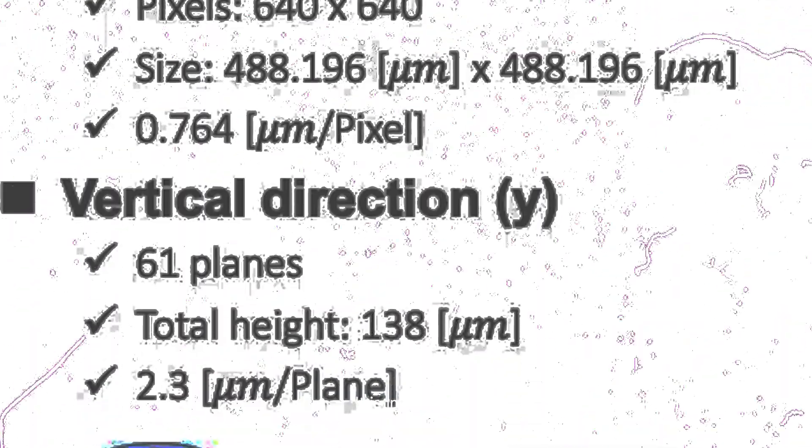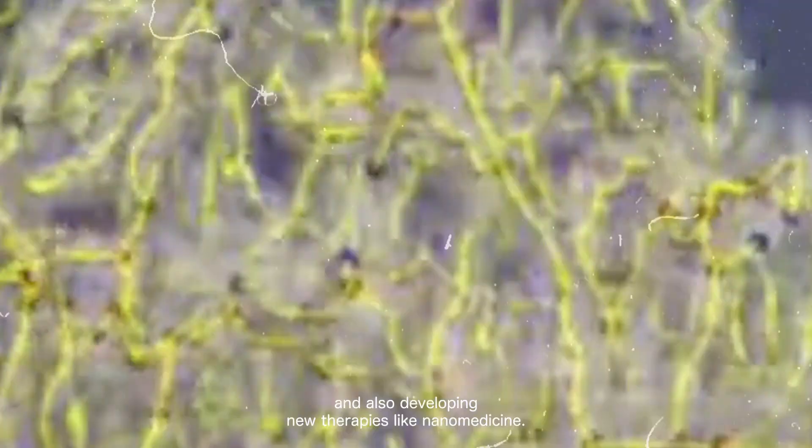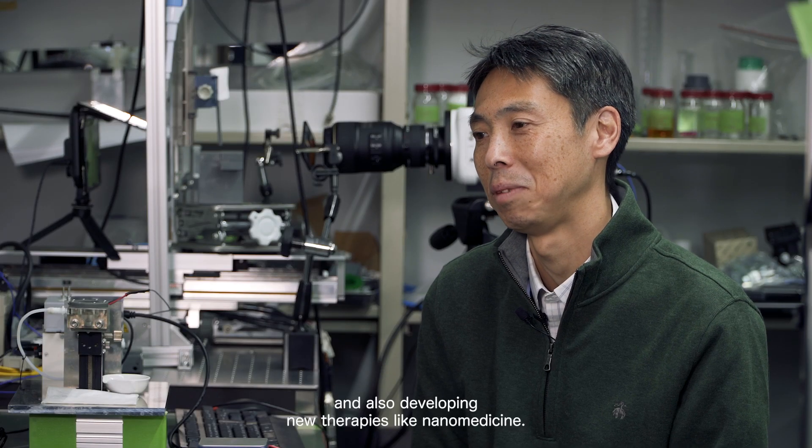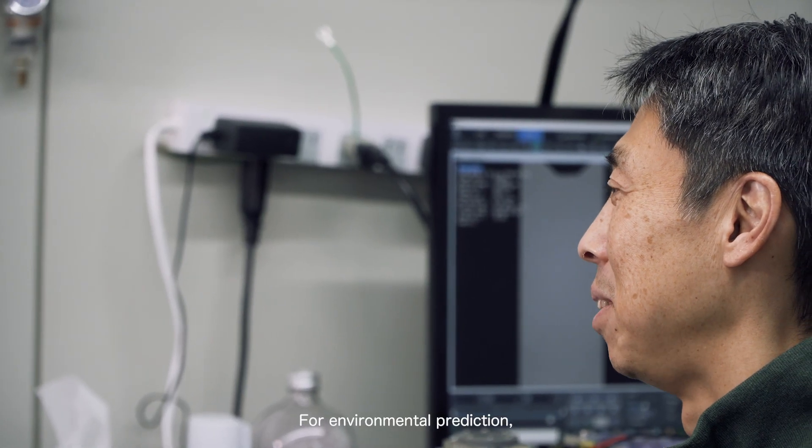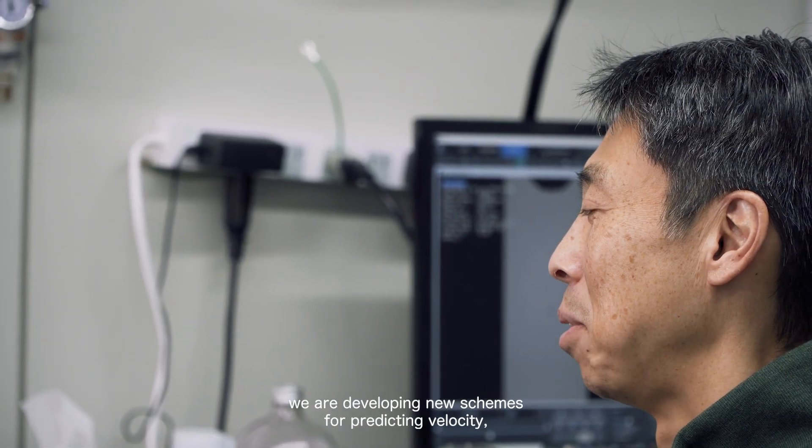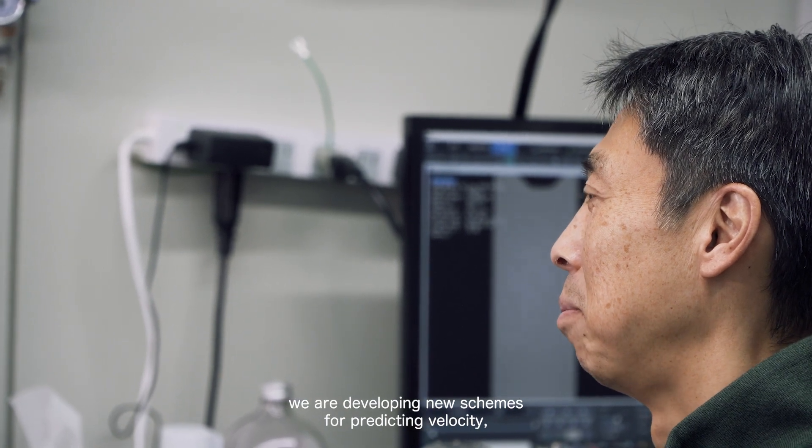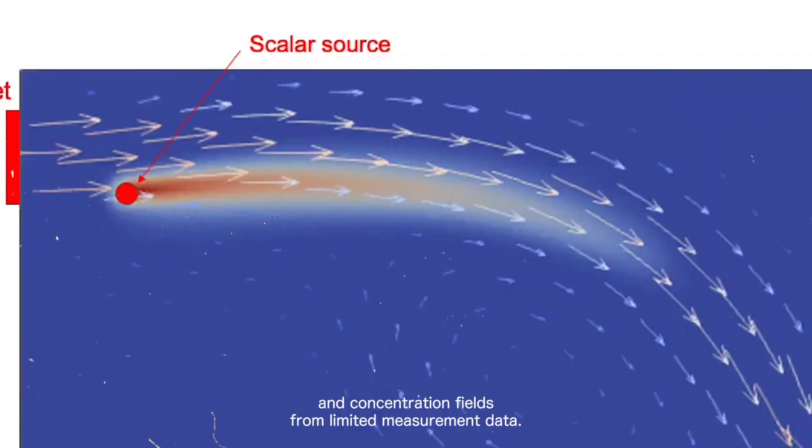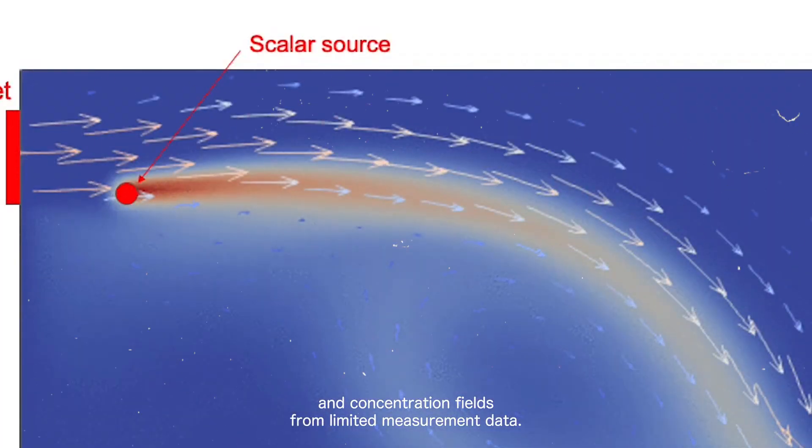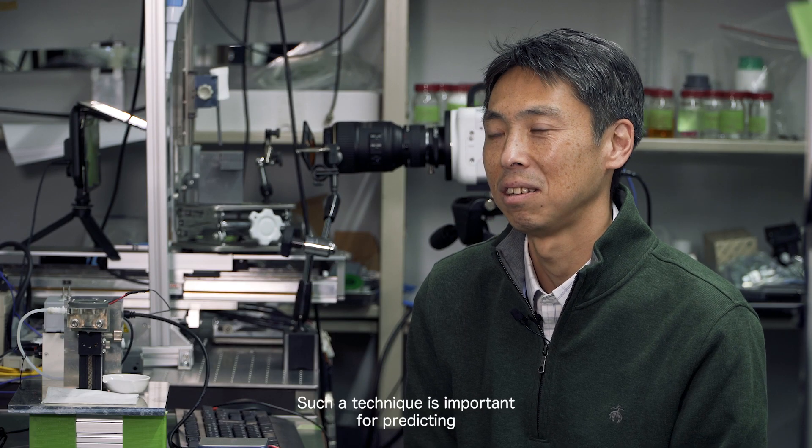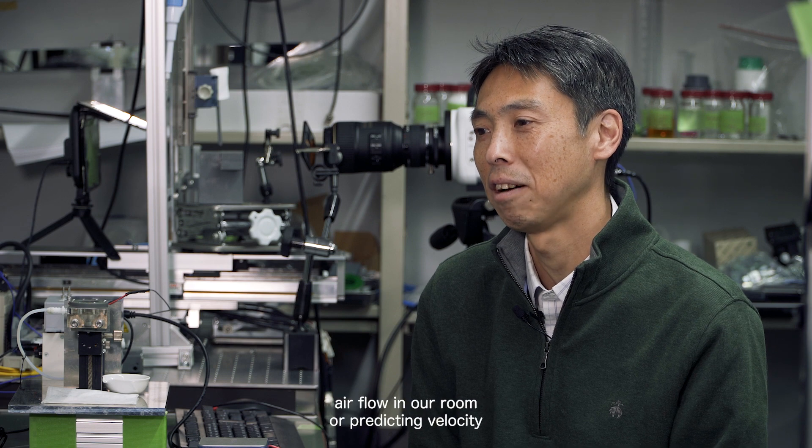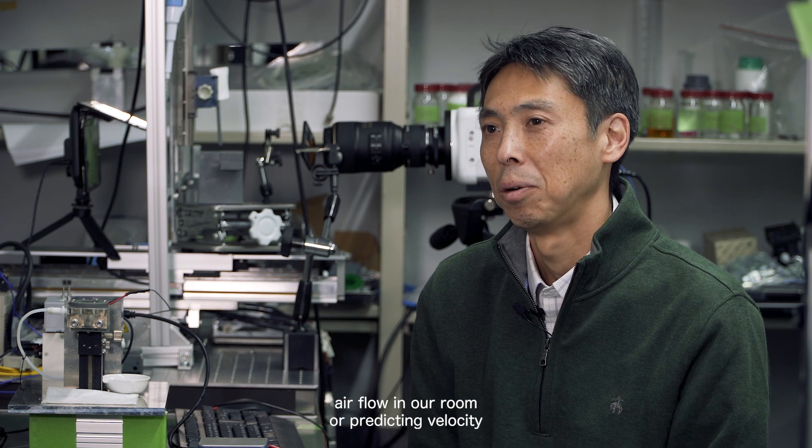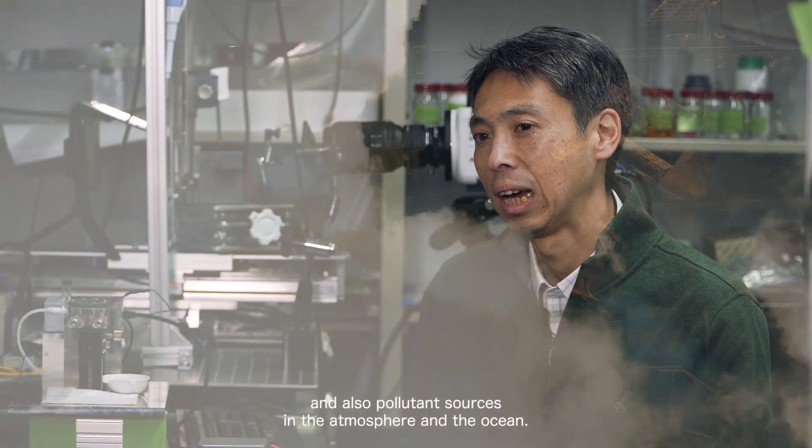It is important for vascular network formation and also developing new therapy like nanomedicine. For environmental prediction, we are developing a new scheme for predicting velocity, temperature, and concentration fields from limited measurement data. Such technique is important for predicting airflow in a room or predicting velocity and also pollutant sources in the atmosphere and ocean.